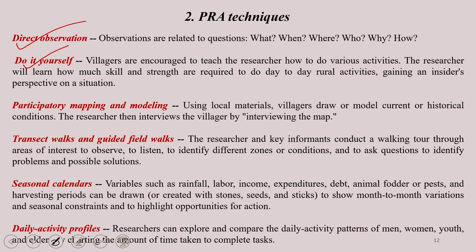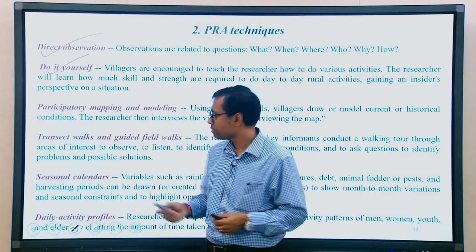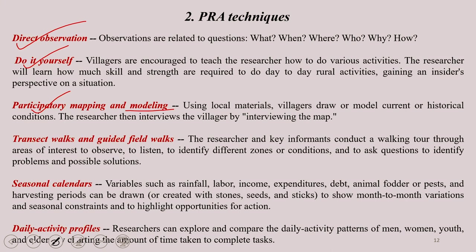Participatory mapping and modeling involves using local materials such as powders, soil, different colored soil, and plants. Villagers can draw resource maps on the floor of a temple, village office, or panchayat office. Using local materials, the villagers themselves can come up with mapping and modeling of their area.